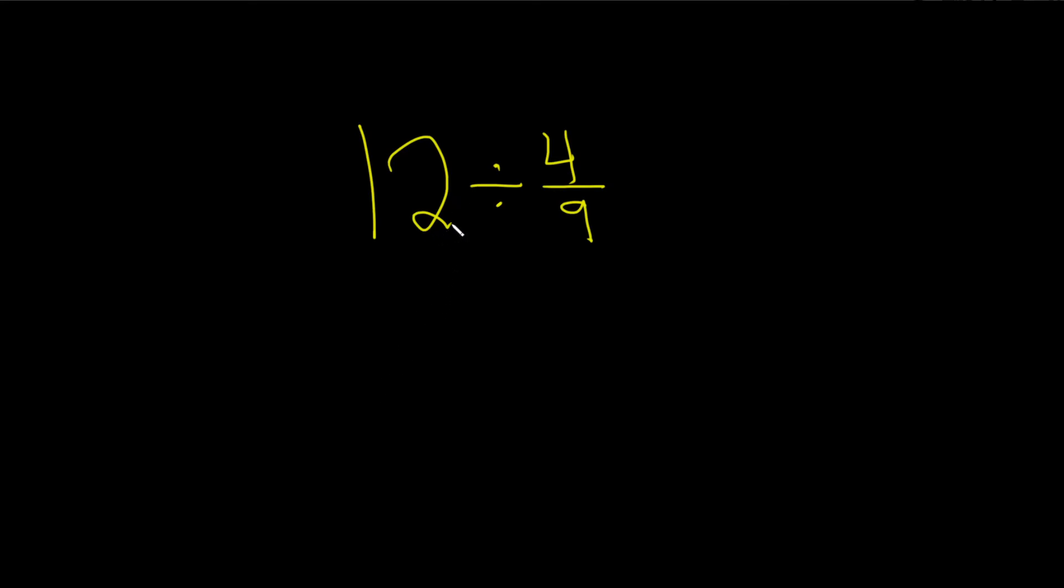In this problem, we have a whole number divided by a fraction: 12 divided by 4 ninths. The very first step is to write this whole number as a fraction. Whenever you have a whole number and want to write it as a fraction, write it over 1. So in this case, we write it as 12 over 1.